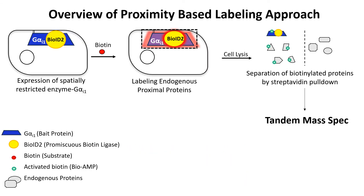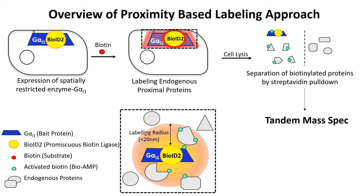To identify effectors of G-alpha-I, I am using a proximity-based labeling approach using the BioID enzyme. BioID is a promiscuous biotin ligase enzyme which uses biotin and ATP and generates activated biotin, which gets attached to proteins in proximity — proteins within less than 20 nm radius. These biotin-labeled proteins are then separated by streptavidin pulldown and identified by mass spec.